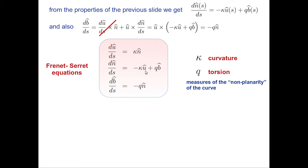For a generic curve, both κ and q depend on s. The torsion q measures the non-planarity of the curve: when the curve lies flat on a plane, the torsion is zero.